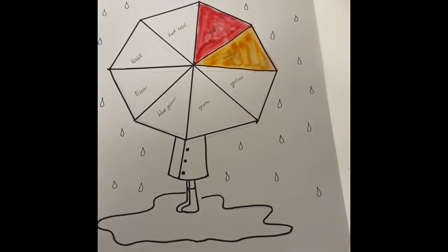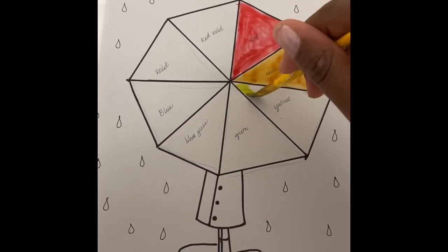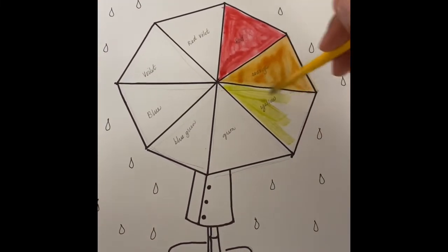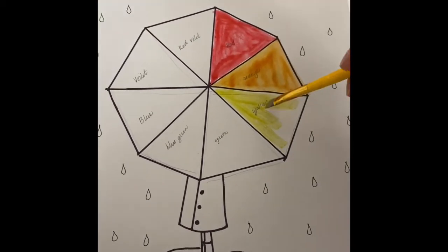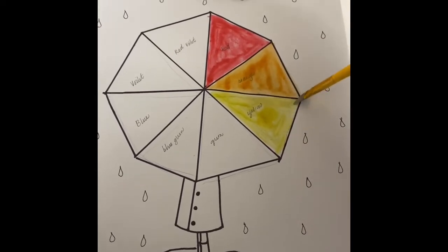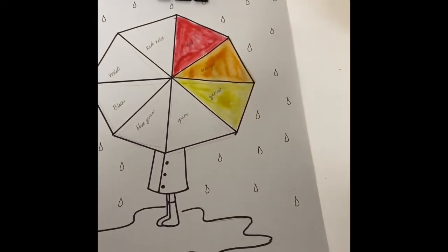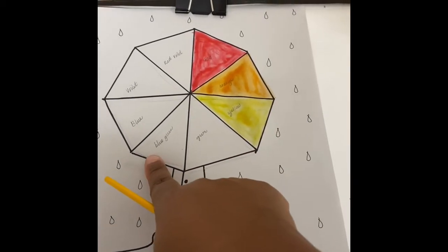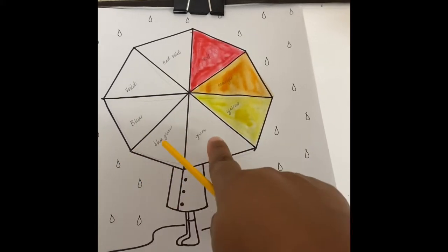Our next color will be yellow. In between yellow, so we have yellow here and then we have blue here, the color green will go here because yellow plus blue equals green.